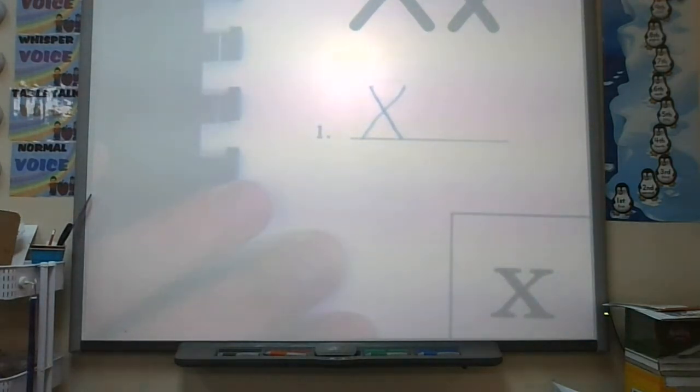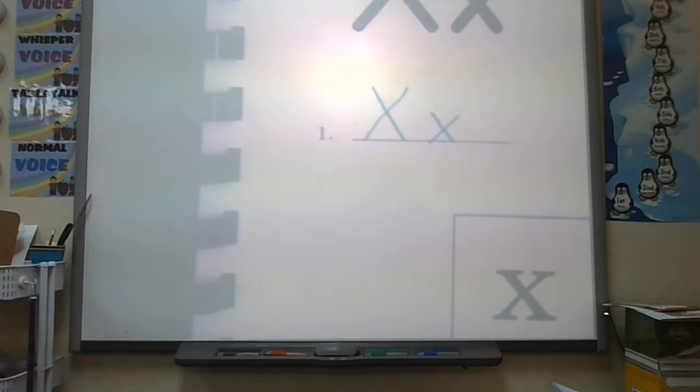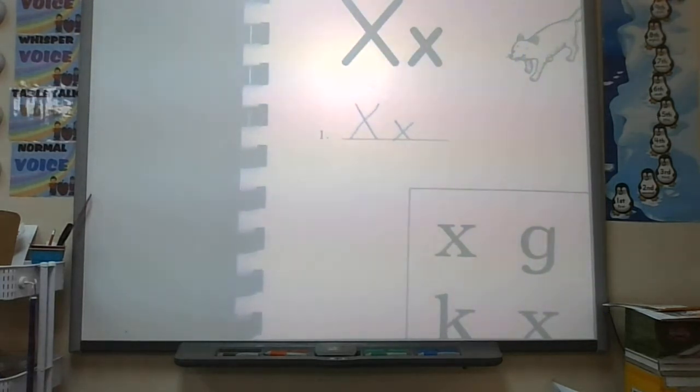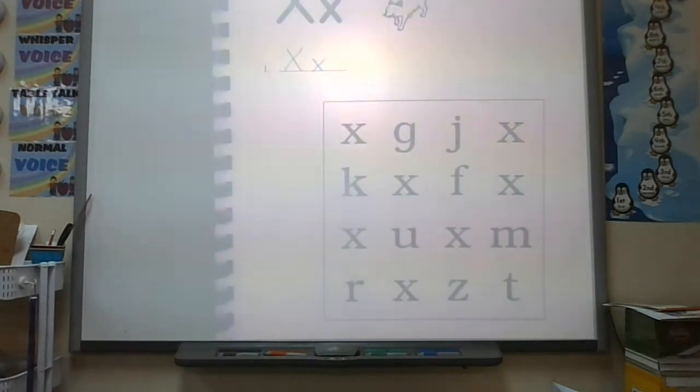Bless you. And then the cool thing about lowercase X, it's the same thing, just smaller. Middle, angle down to the right, pick it up. Middle, angle down to the left. Can we do it? All right, now go ahead and make your very most bestest, awesomest uppercase, lowercase X on line number one. And when you're finished, what are you looking for in this box? X. What kind of X's? Lowercase. Find and circle all of the lowercase X's, then turn the page when you're finished.